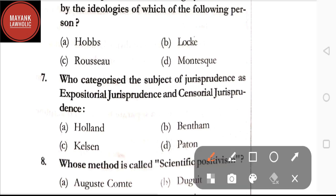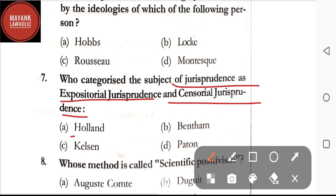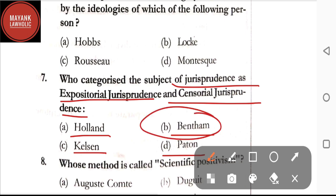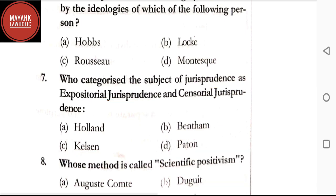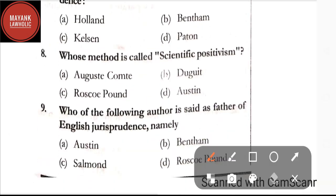Question number seven: who categorized the subject of jurisprudence as expositorial jurisprudence and censorial jurisprudence? Options: Holland, Bentham, Kelsen, Salmond. The correct answer is option B, that is Bentham. Bentham categorized the subject of jurisprudence as expositorial jurisprudence and censorial jurisprudence. Question number eight: whose method is called scientific positivism? Option A: Auguste Comte; option B: Duguit; option C: Roscoe Pound; option D: Austin. The correct answer is option A, Auguste Comte.